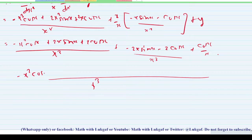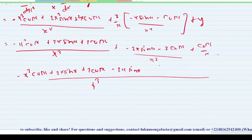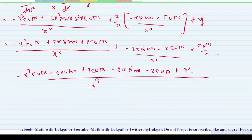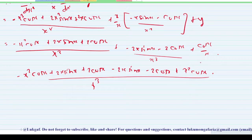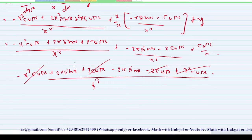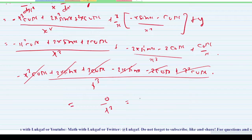Now collecting terms over x³: minus x²·cos(x) plus x²·cos(x) cancel; plus 2x·sin(x) minus 2x·sin(x) cancel; plus 2·cos(x) minus 2·cos(x) cancel. What is left is zero divided by x³, which gives zero.